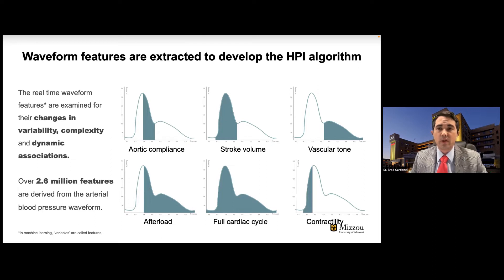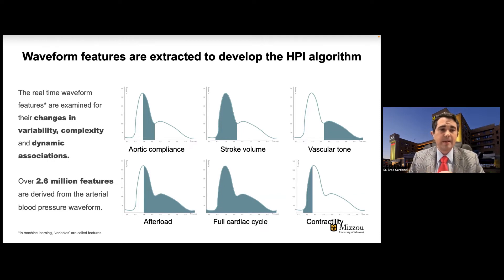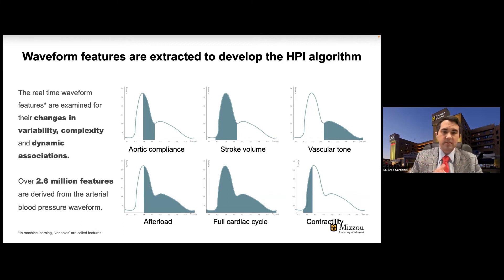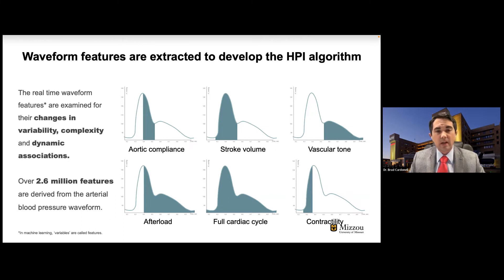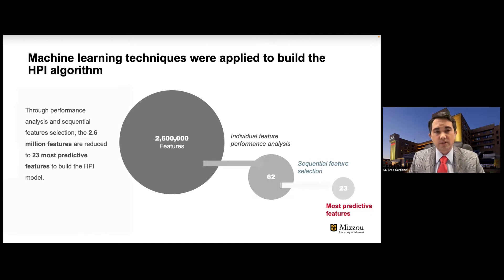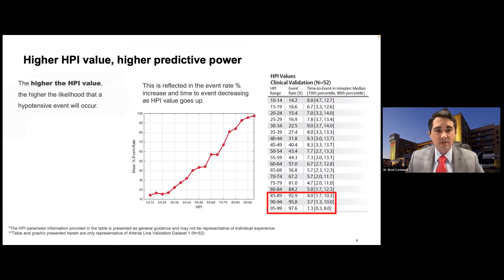How did they develop this algorithm? They used waveform features extracted from the arterial line waveform, using not just a single feature such as afterload, but combinatorial factors and complex dynamic associations. They found 2.6 million features derived from the arterial pressure waveform. There may be anesthesiologists who can tell when a patient's getting sick based on the arterial line waveform — the upstroke isn't as steep and so on — but can you do it every 20 seconds using 23 complex features? That's where this machine learning technology helps, providing that information to the clinician for interpretation. They ran machine learning algorithms on those 2.6 million features and narrowed it down to the 23 features that best predict a hypotensive event.